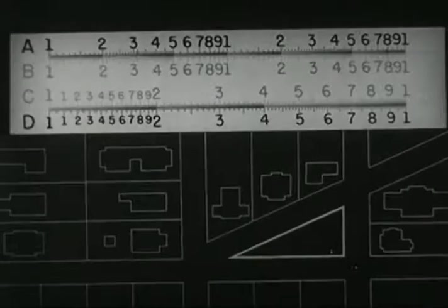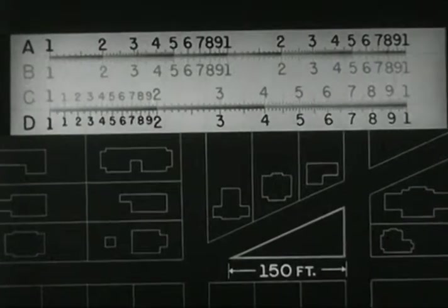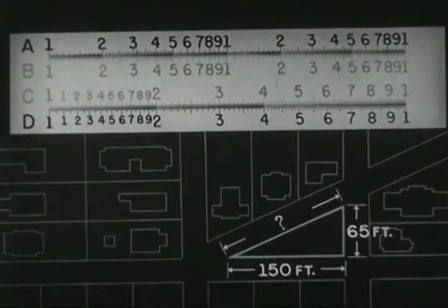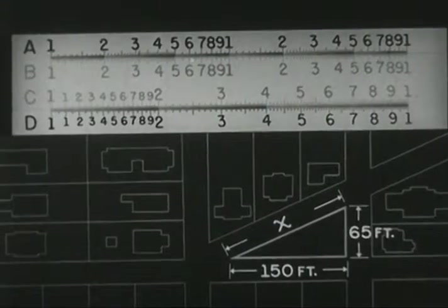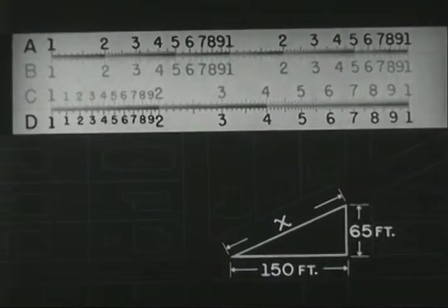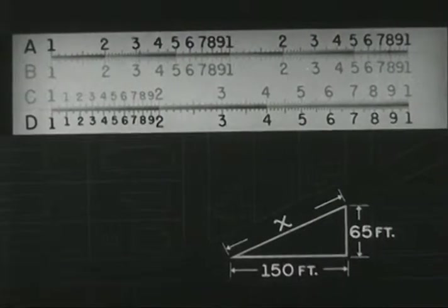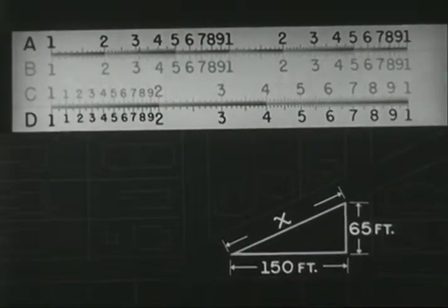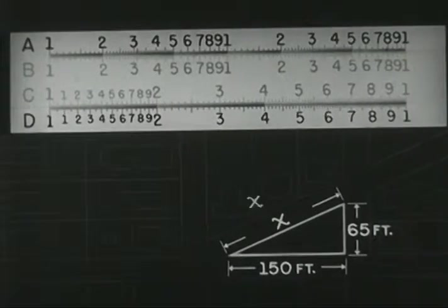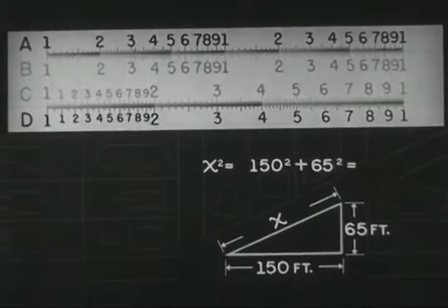As an example of a practical problem involving squares and square roots, a piece of land is in the shape of a right-angled triangle. One side measures 150 feet, another 65 feet. What is the dimension of the long side, x? x, in this example, is the hypotenuse of a right-angled triangle. We know that the square of the hypotenuse of a right-angled triangle is equal to the sum of the squares of the other two sides. In other words, x squared equals 150 squared plus 65 squared. Then, x equals the square root of the sum of 150 squared and 65 squared.